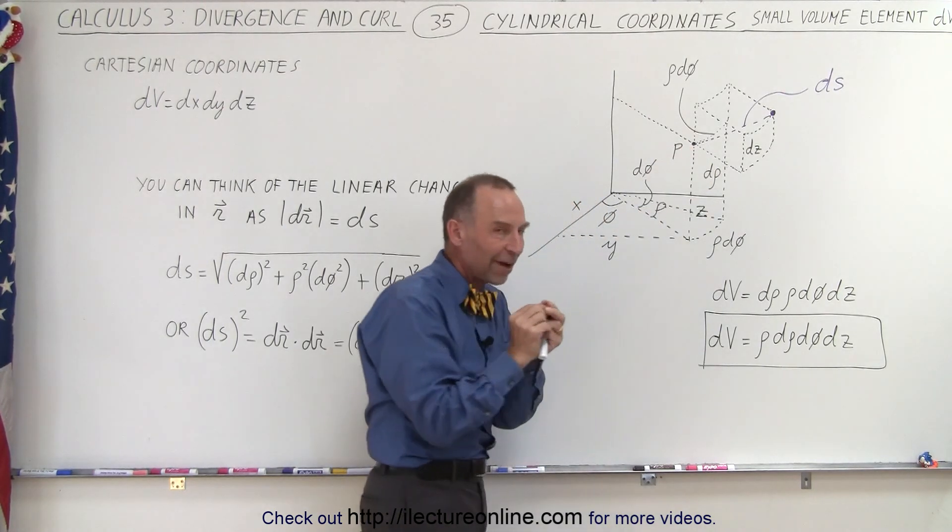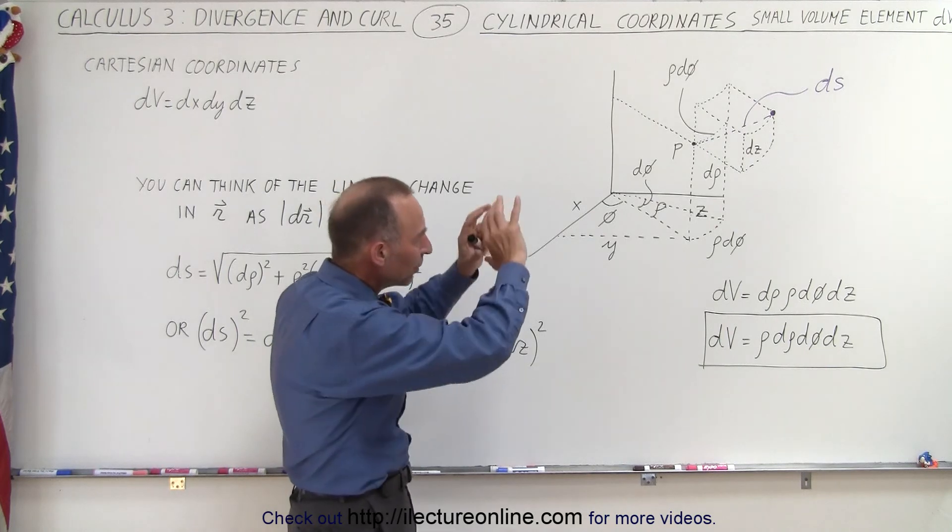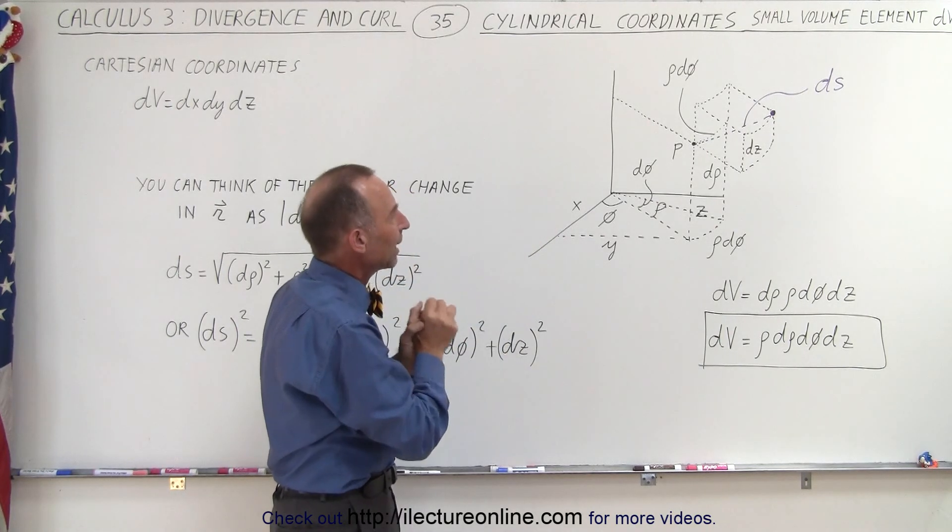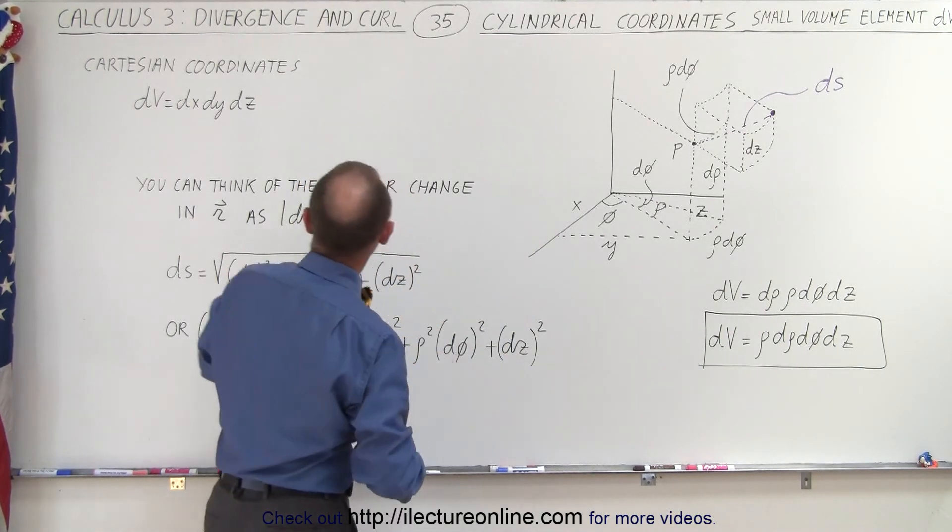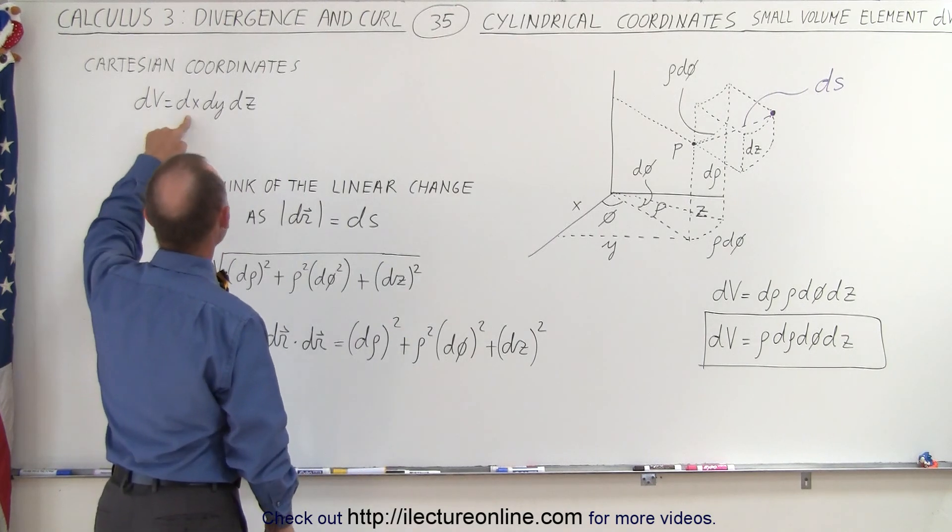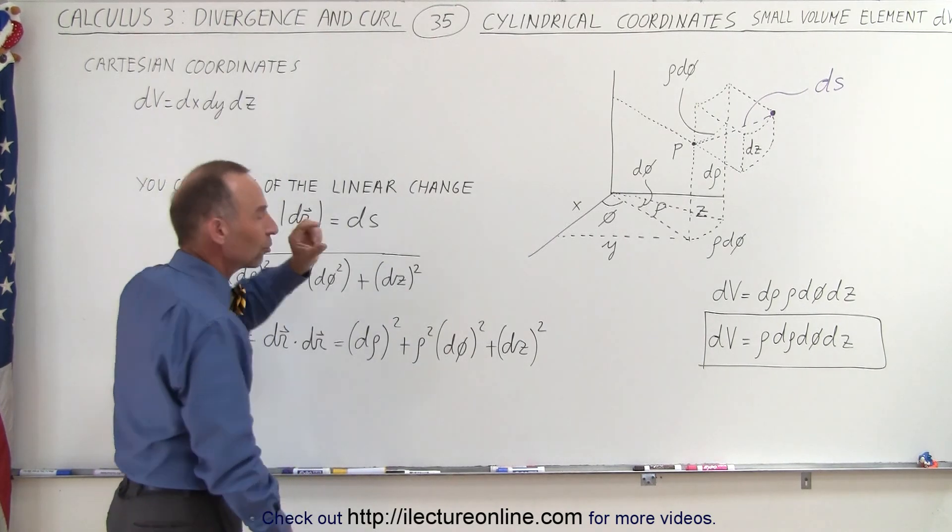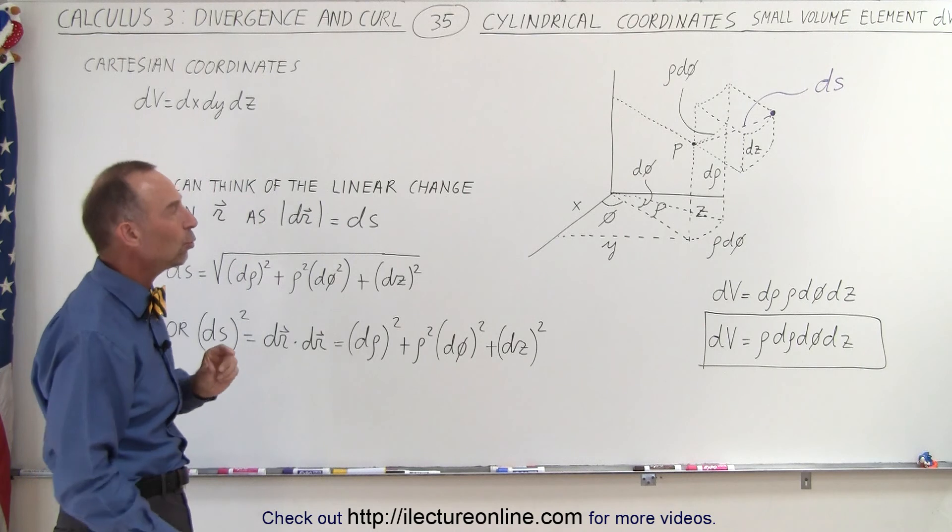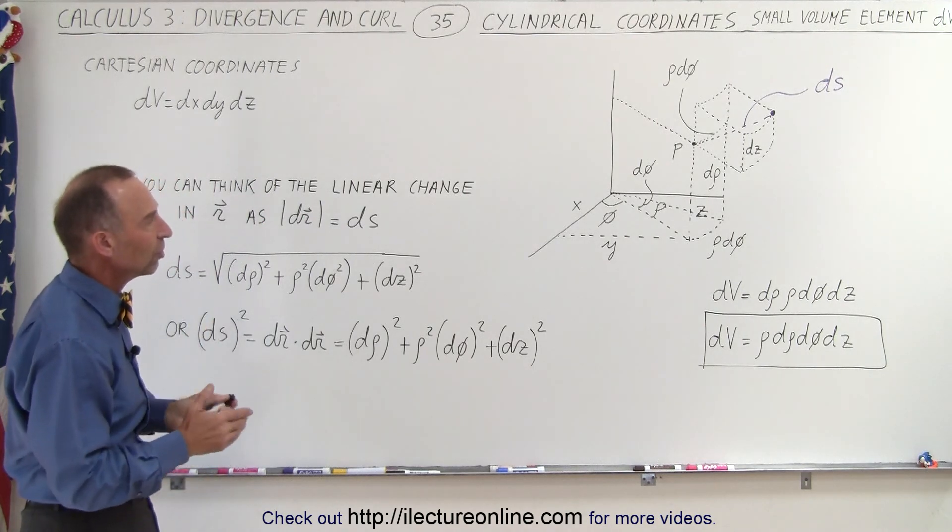Now, if we want to define a very small volume region, or volume element dV, in Cartesian coordinates, we used to call that dx times dy times dz, a small change in x, a small change in y, and a small change in z.